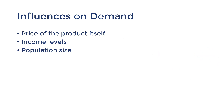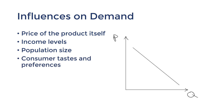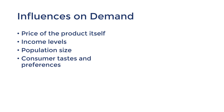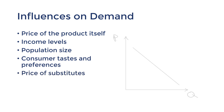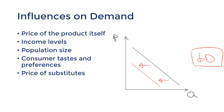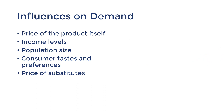A change in consumer taste or preference will also cause a shift in demand. If people start to prefer an alternative product, they'll spend less on our product, so demand for our product will decrease. This brings us to the next influence: price of substitutes. If a competitor lowers their prices, demand for our product will decrease — at the same price, we'll be able to sell a lower quantity. Conversely, if they increase their price, customers will come to our product, causing demand for our product to increase.